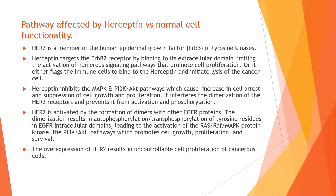Herceptin targets the ERBB2 receptor by binding itself to the extracellular domain, limiting the activation of numerous signaling pathways that promote cell proliferation. It can also flag immune cells to bind to the Herceptin and initiate lysis of the cancer cell. Herceptin inhibits the MAPK and PI3K-AKT pathways, causing cell arrest and suppression of cell growth and proliferation, by interfering with the dimerization of the HER2 receptors and preventing activation and phosphorylation.